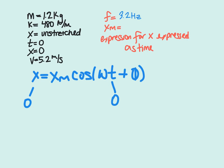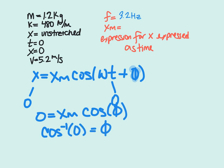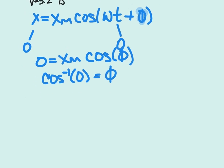We can rearrange this equation to solve for phi. Rearranging, we get that 0 equals amplitude times cosine of phi. Solving for phi, we would divide by xm, which would be 0, and the reverse cosine of 0 equals phi, which means that phi equals pi over 2.